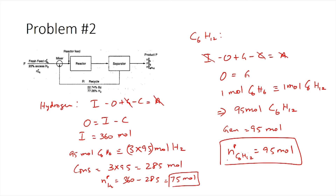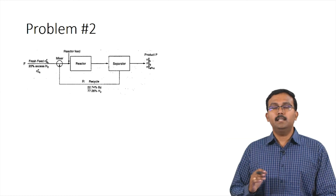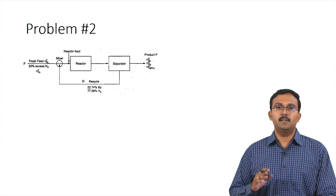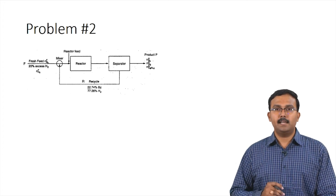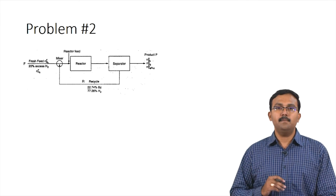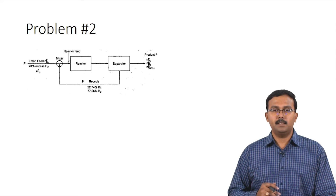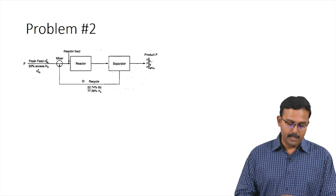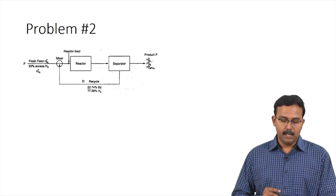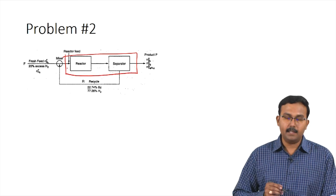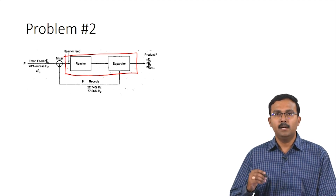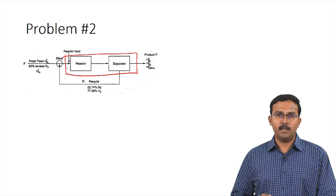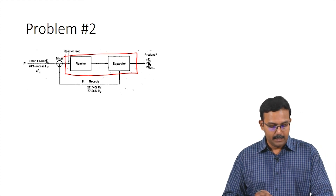Now that we have all component quantities in the product stream, the molar compositions can be calculated — that is left as an exercise. To find the recycle ratio, we need a system where the recycle stream crosses the system boundary. Since we know the single pass conversion and the product stream values, choosing the reactor and separator together as the system is appropriate.